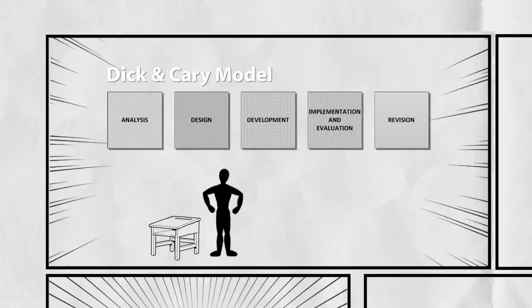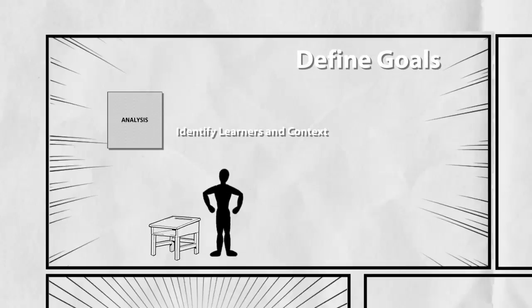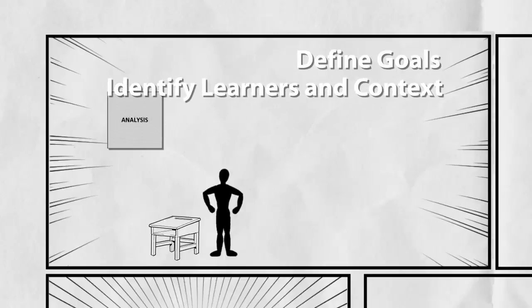Let's see if that model can help us by starting with this first phase of the model, the analysis phase. Front-end analysis is that part of the process where we look to define our goals, look at our learners and the context in which learning will take place, and look at the tasks that will be involved in the learning. These three pieces make up the analysis phase.